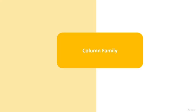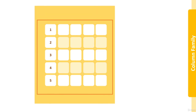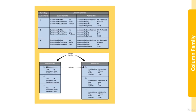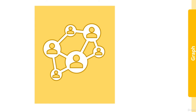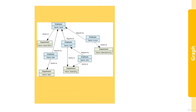Column family organizes data as rows and columns, similar to a relational database but in a denormalized way. Columns that are logically related are grouped into column families, avoiding joining multiple tables and reducing reads when retrieving data. Each row contains a key; data may conceptually appear stored together but is physically stored separately. Graphs store information in two elements: nodes, which are instances of an entity, and edges, which specify the relationship between nodes. Both can have properties and edges can have direction. Graphs enable complex relationship analysis very quickly.